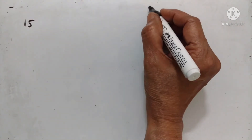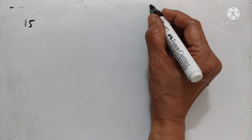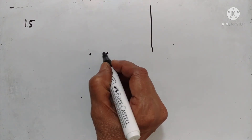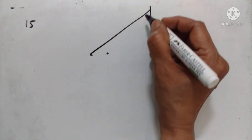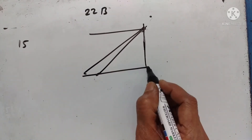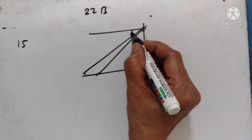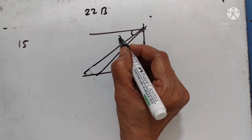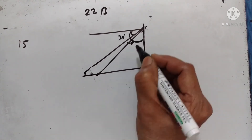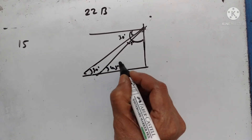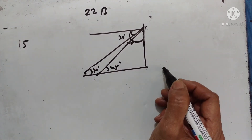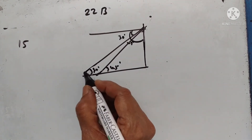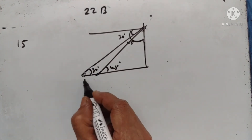Problem 15. From the top of a hill — suppose this is the hill — the angles of depression of two consecutive kilometer stones due east are found to be 30 degrees and 45 degrees respectively. So this is 30 degrees and this is 45 degrees. Find the distances of the two stones from the foot of the hill.